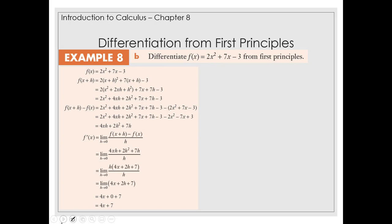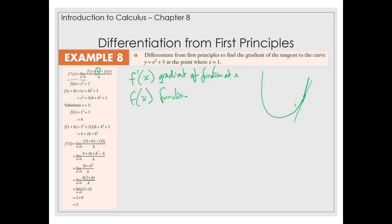So we can put in different values of x once we've actually got a description of what the gradient is, and then find out what the gradient is at particular points along the curve.